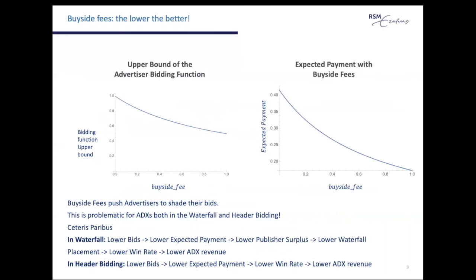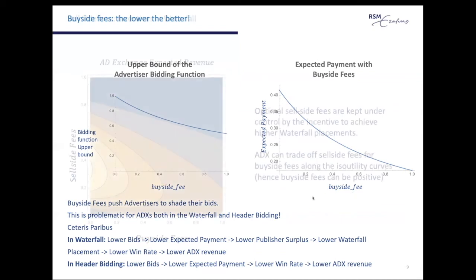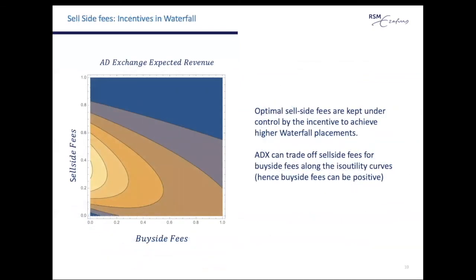In the next few slides I'll show some preliminary results. First, in line with the current market situation, we find that ad exchanges always have an incentive to keep buy-side fees as low as possible. This is because advertisers shade their bids when they expect their surplus to be extracted, leading to overall lower expected payments. In terms of sell-side fees, under the waterfall mechanism ad exchanges can trade off between buy-side and sell-side fees and have an incentive to keep sell-side fees under control to maintain higher positions in the waterfall ranking.